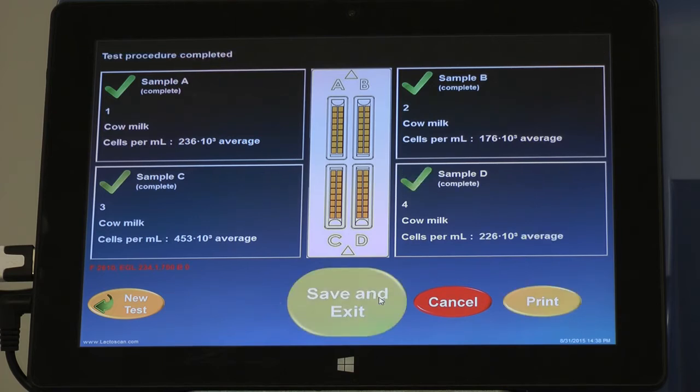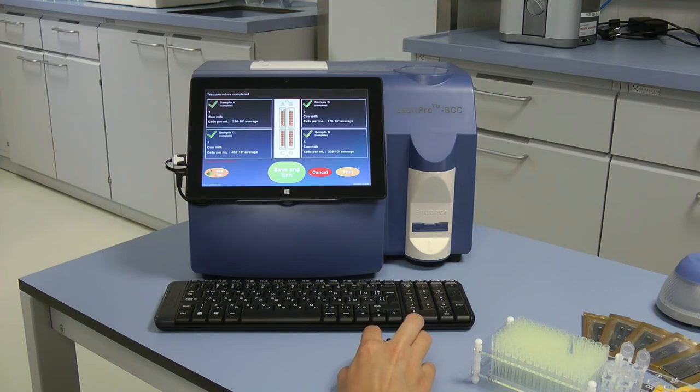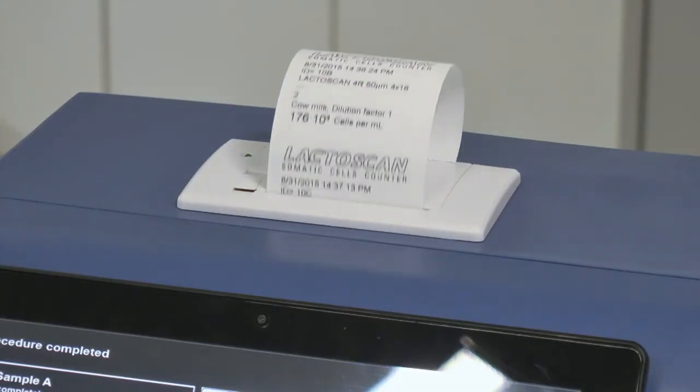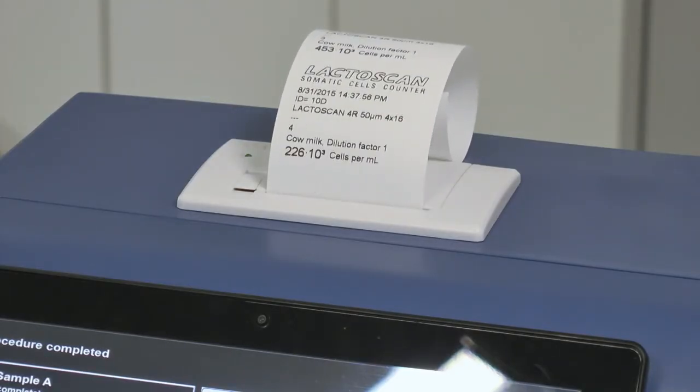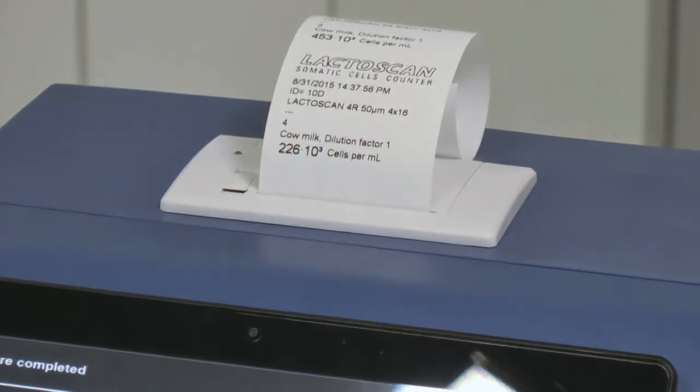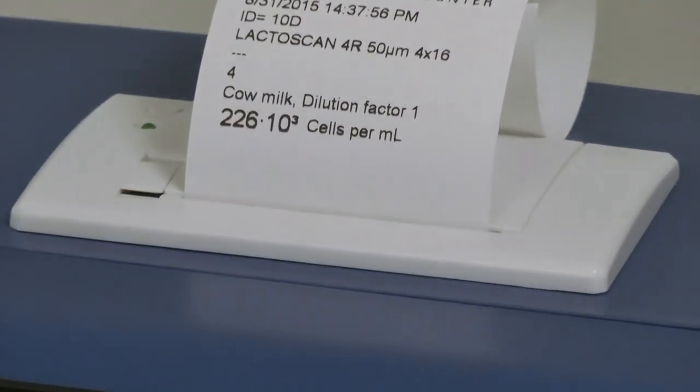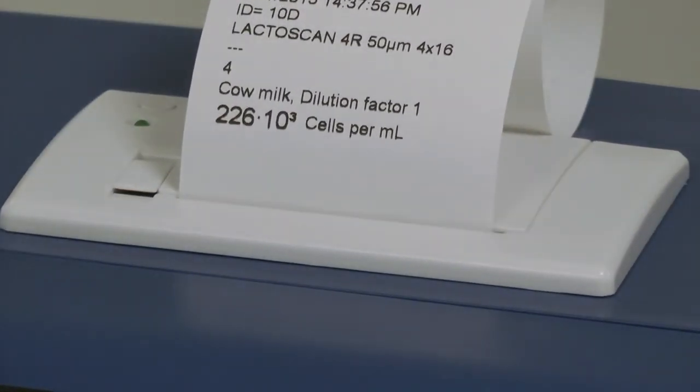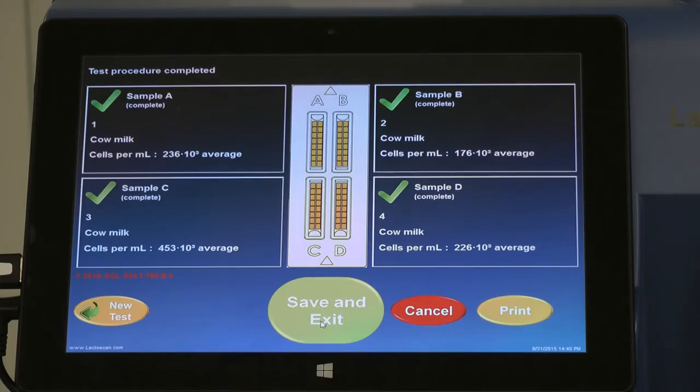When ready, in order to print the results, press Print. It is not necessary to choose a printer or form of printing. By default, it is accepted that LactoScan will print the results on the integrated printer in a short form. Your results are now printed. In order to save the results and continue, press Save and Exit.